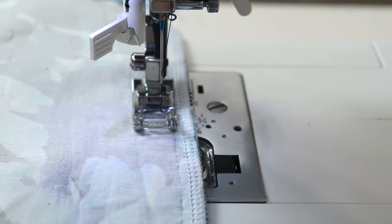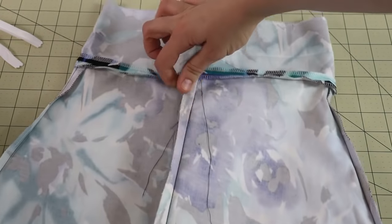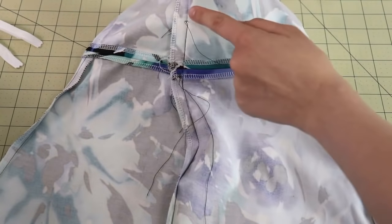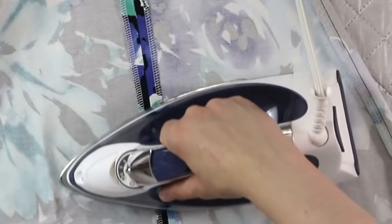This is how the seam looks when it's all done—you see it goes from the crease of the waistband all the way down. Now the next thing that you're going to do is give it a really good press.